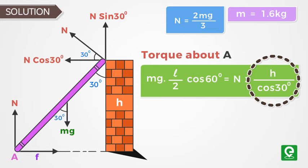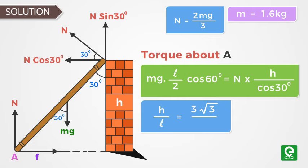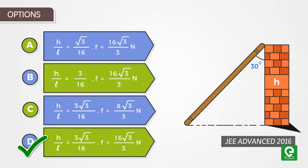On substituting the values of normal force and cos 30, we get ratio h by l equal to 3 root 3 by 16. Hence option D is correct.